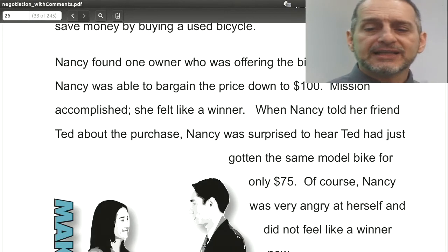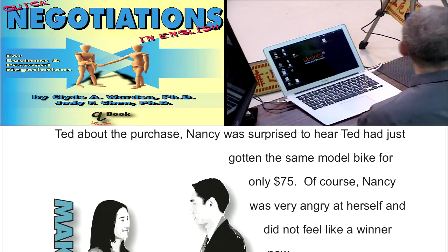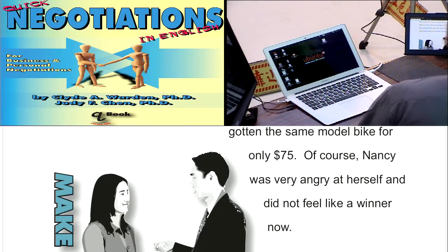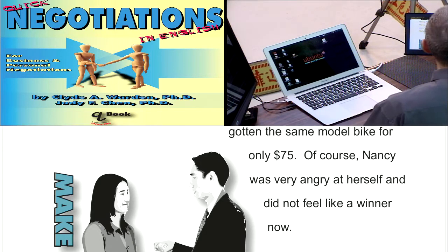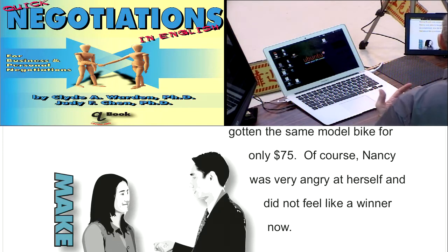Let's say Nancy. She wants to get a bicycle. She's living in the USA and she finds a bike for $150. She negotiates, haggles, and gets the price down to $100 — that's a one-third reduction. She goes home feeling like a winner, thinking she's a great negotiator. She tells her friends: I bought this $150 bike and got it for $100.